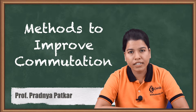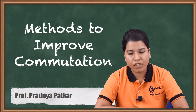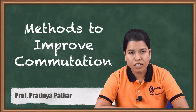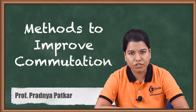Hence, the current in the coil gets reversed. But this process does not take place smoothly. Some amount of sparking occurs when the current reversal takes place. Hence, we have to devise methods to improve the process of commutation. In this video, we are going to study the various methods to improve the process of commutation.